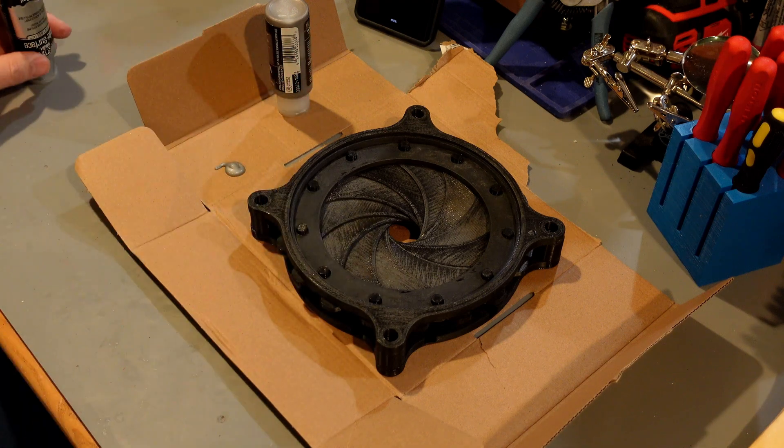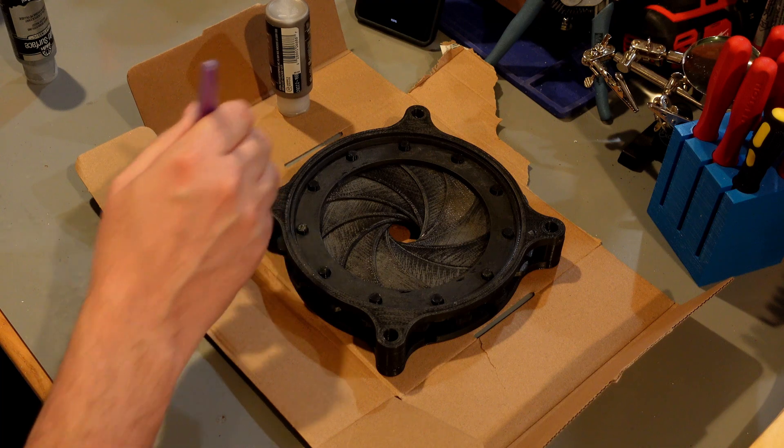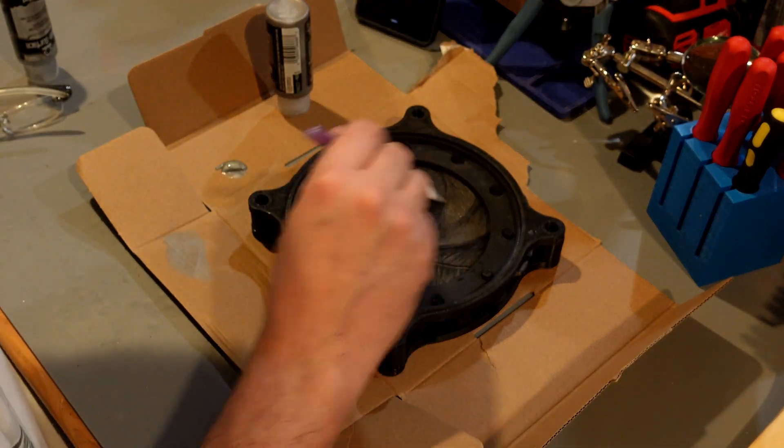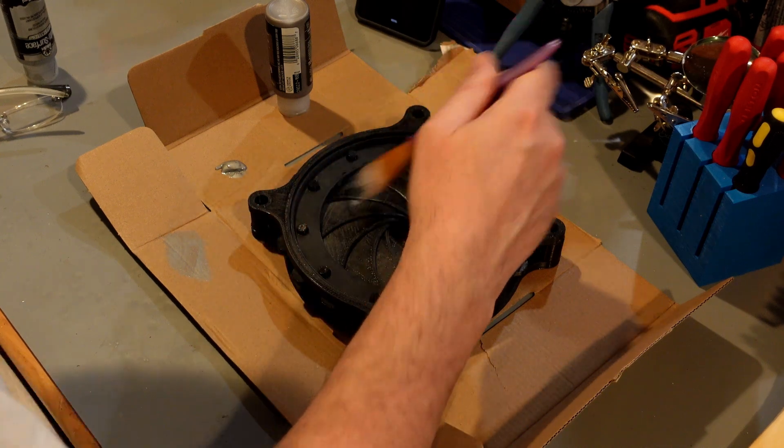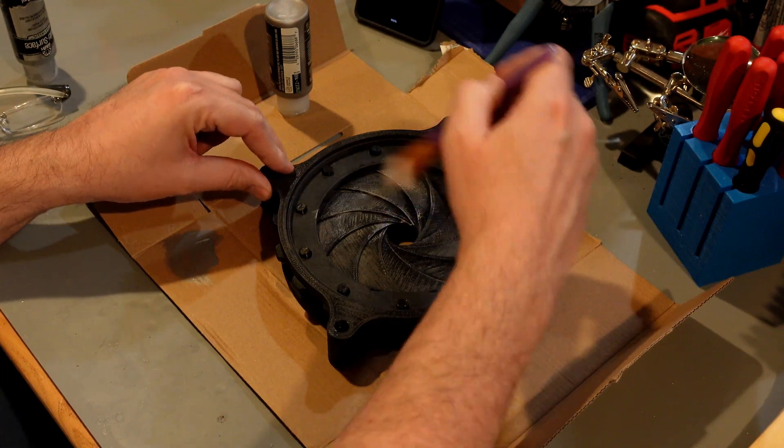Now it's time for some weathering. I decided to print this thing in black. It's just standard PLA. And one thing I noticed is that you want to take your brush when you're kind of dry brushing this thing.